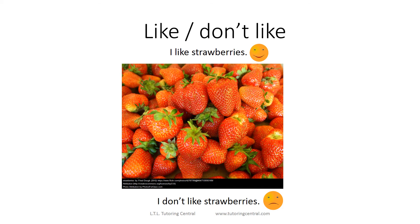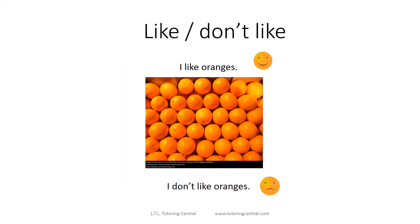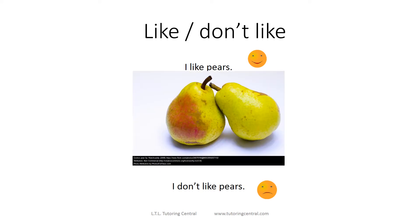Next we have oranges. 'I like oranges' or 'I don't like oranges.' Oranges are easy to remember because they're the color orange. Here are some pears — you can say 'I like pears' with a happy face, or 'I don't like pears' with a sad face.